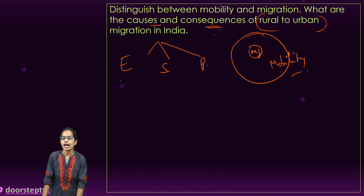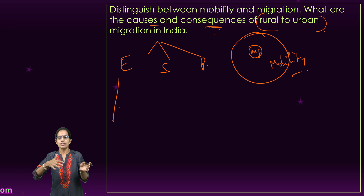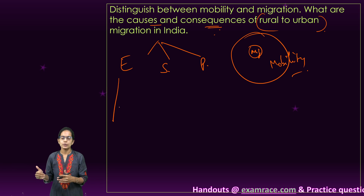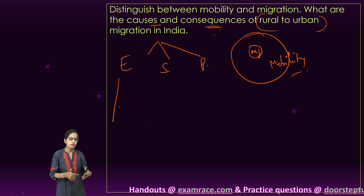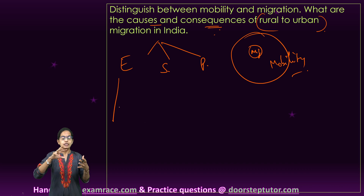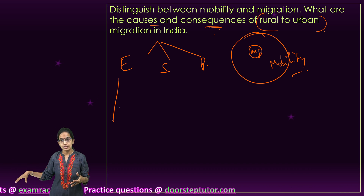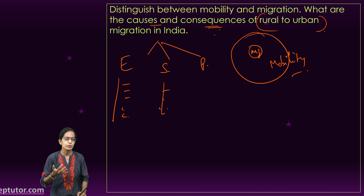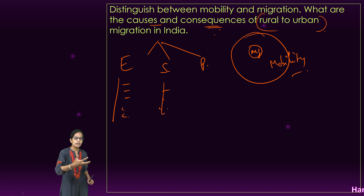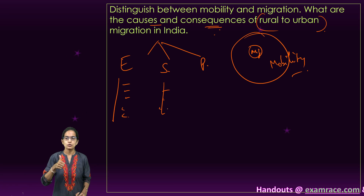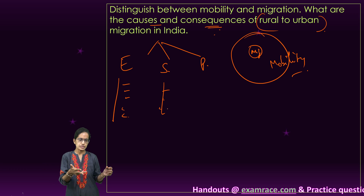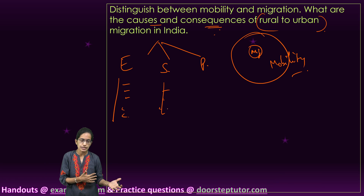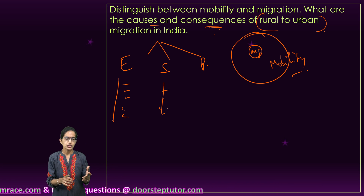Classify it and then reclassify it. For example, under economic causes, you can explain career options, better wages, higher perks, and disguised unemployment that occurs in village areas. Under social causes, we would have points related to better opportunities for growth, better healthcare, better educational facilities, movement because of institutional changes, family movement, and better opportunities for recreation.